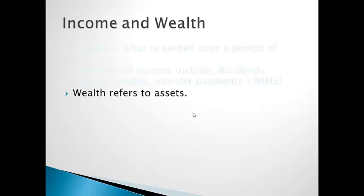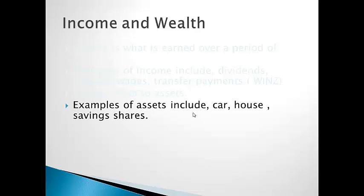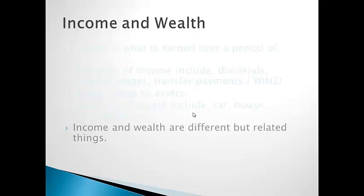Whereas wealth refers to assets, and these include things like cars, houses, savings, and shares. It's true that some assets produce income, but not all. For example, a car doesn't. So you can have a contrast between income and wealth, but they are related to each other.